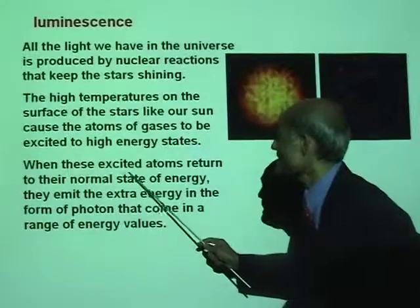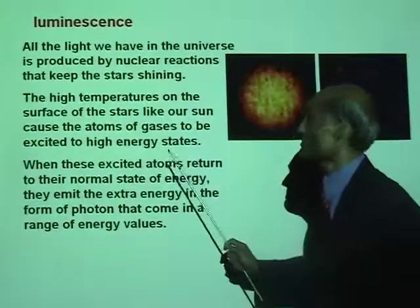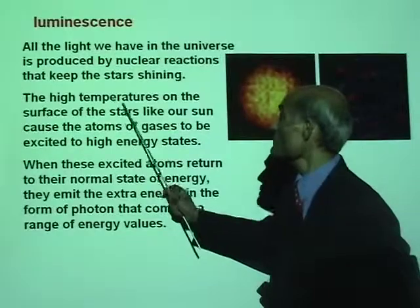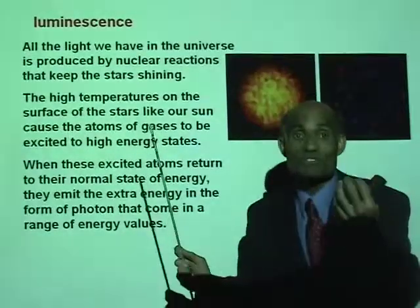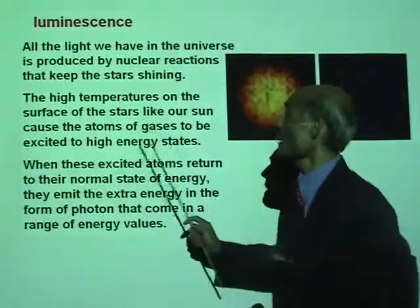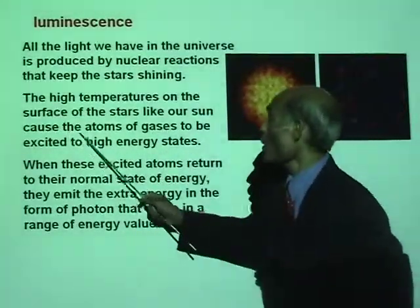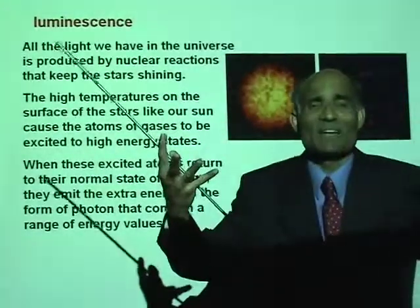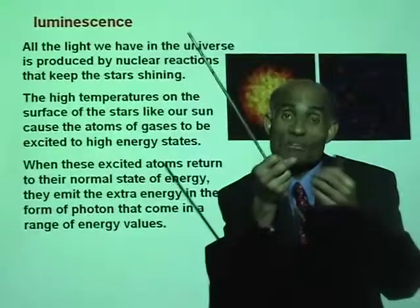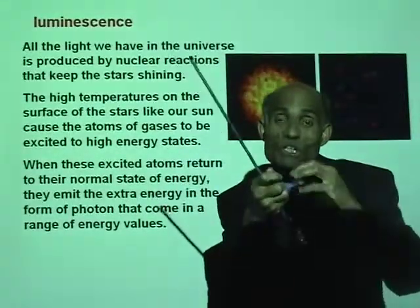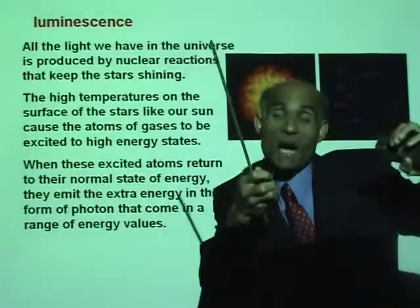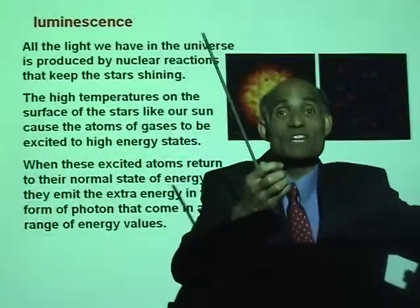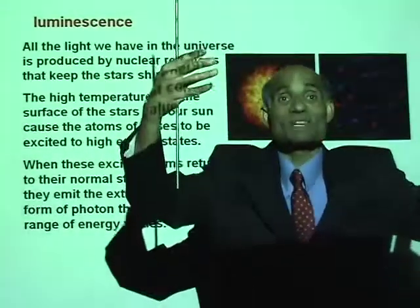When these excited atoms — the high temperatures on the surface of the stars, like our sun — cause the atoms of gases to be excited. The electrons from the inner orbit move to the outer orbit because of the extra energy they received due to the high temperature. When these excited atoms return to their normal state, the extra energy is actually given out.